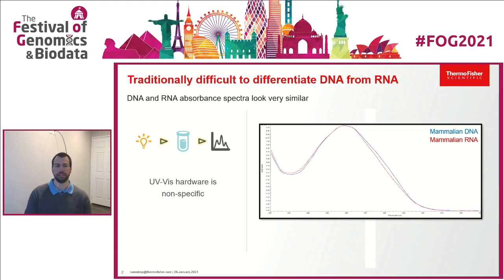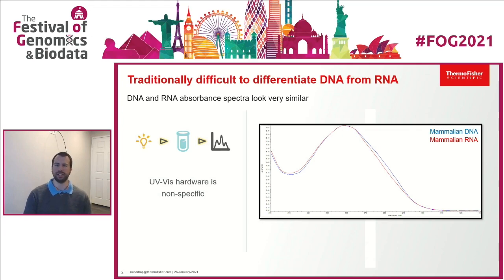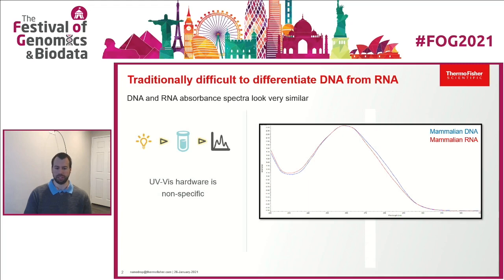Looking at literature, there are a number of papers talking about how to identify DNA contamination in RNA and vice versa, and what techniques can clean up your sample. We know this is a problem facing scientists around the world across multiple segments, so we took the approach of trying to identify how we can differentiate DNA from RNA using a quick UV-Vis measurement in the same sample.